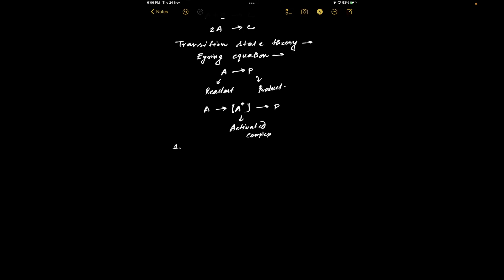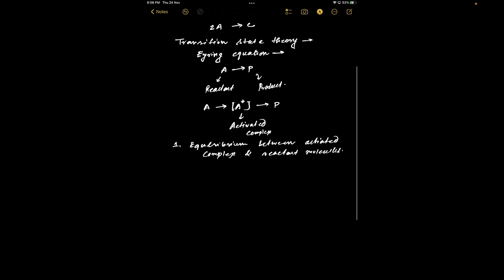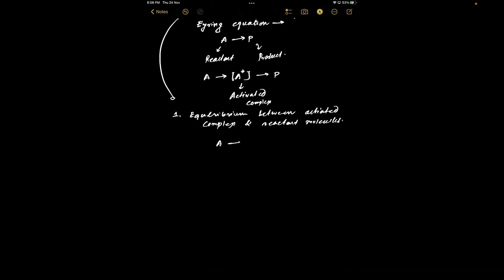The first approximation of transition state theory is that there is a pre-equilibrium between the activated complex and the reactant molecules. So the step A → A‡ is a pre-equilibration step. From this step, the rate constant is K₂ and the equilibrium constant for this step is K‡.